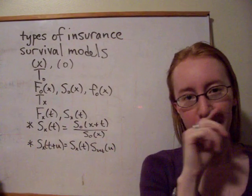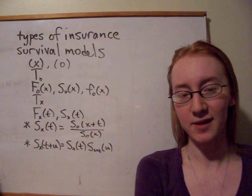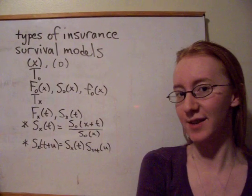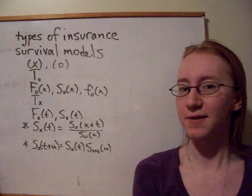And that's what we're doing, we're basically calculating a conditional probability. We know that the life is already age x, so we're conditioning on that fact that T0 is greater than x, and then looking at from there, what's the chance they survive t more years.